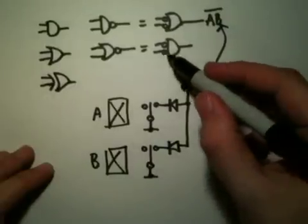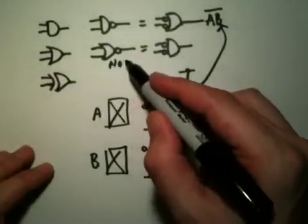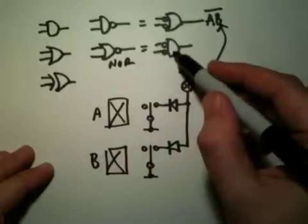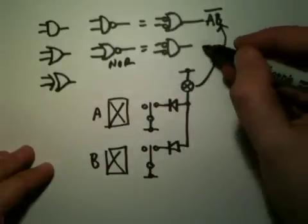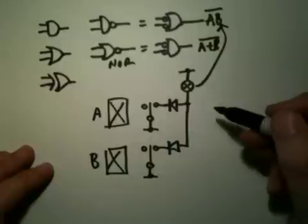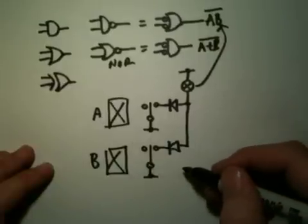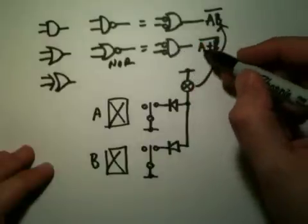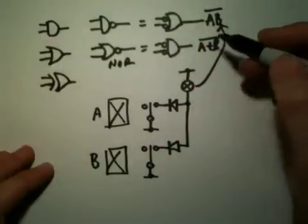And then the other NOR gate, which is equivalent to this, that is A or B inverted, well, that can be done by realizing that it's actually A inverted and B inverted.